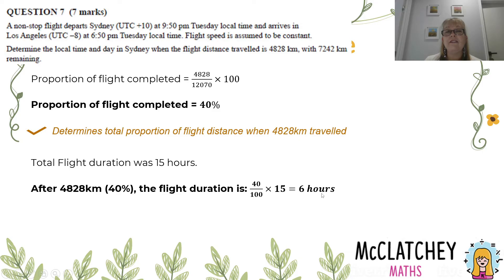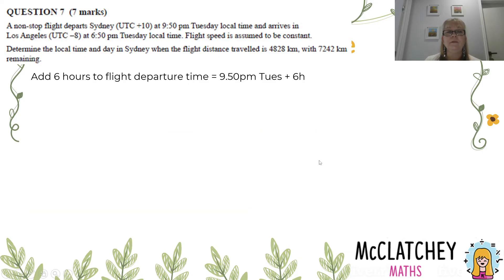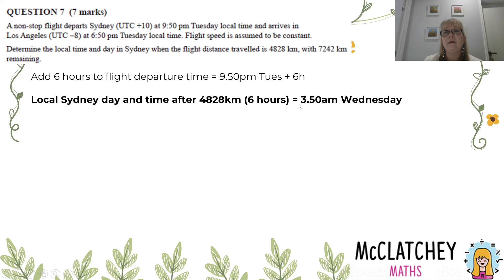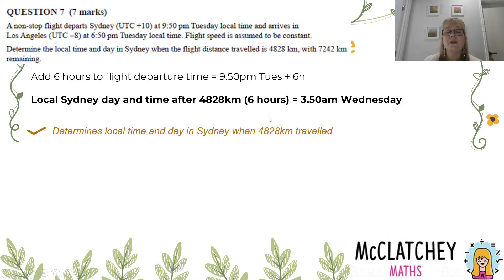Now I'll add those 6 hours to my start time. I departed at 9:50 pm, and I've been flying for 6 hours to get to this stage. So 9:50 pm plus 6 hours makes 3:50 am on Wednesday — that's the Sydney time when the flight is 4,828 kilometres into the journey. And I get my next mark for that.